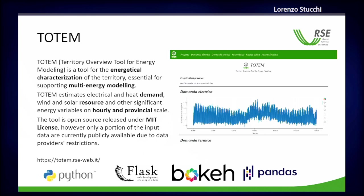You can also estimate wind and solar resources and other significant variables, all provided at hourly and provincial scale. The tool is open source, so it can be adapted if you have data for other parts of the world. All the main code is open source, you can test it online, and there is a final visualization shown here based on provinces. It's built on Python, Bokeh, and Pandas — well-known libraries that also produce nice graphs.